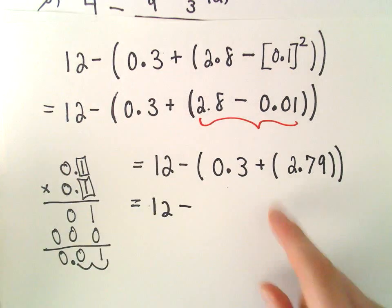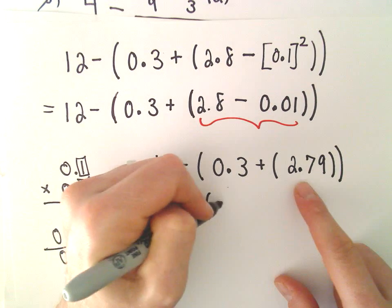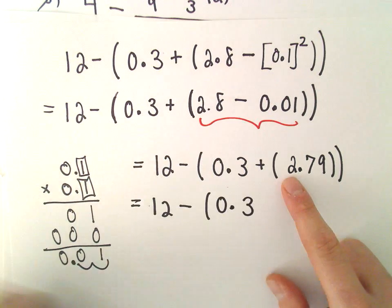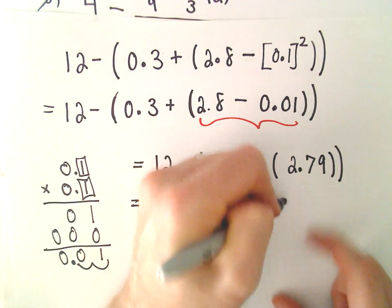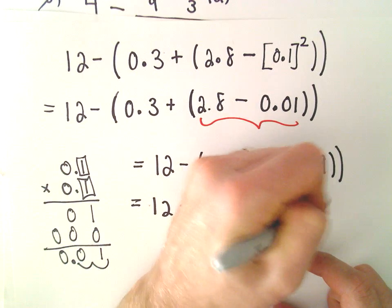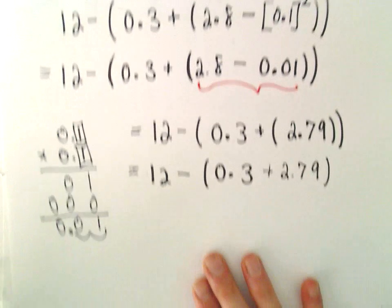And now, again, I'm going to keep moving inside the parentheses. We could simply get rid of the parentheses around the 2.79. All right, so I think we're pretty close here now.